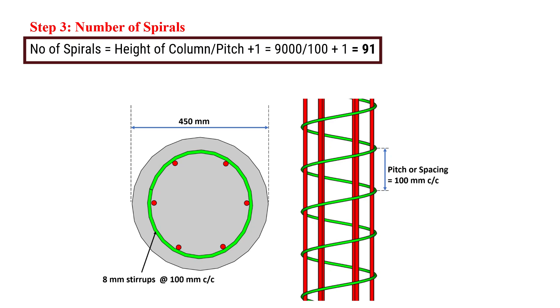Height of column is given as 9000 mm, pitch is given as 100 mm center to center. On substituting these values, the number of spirals will be 91.